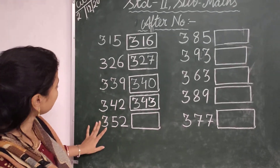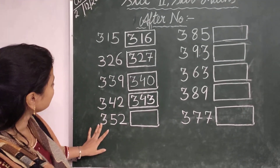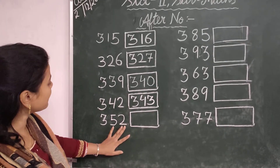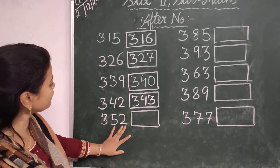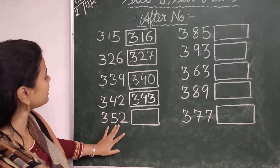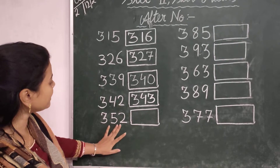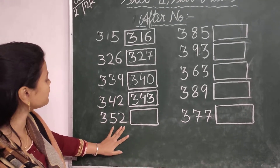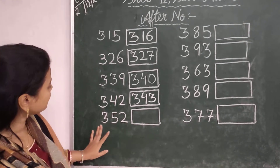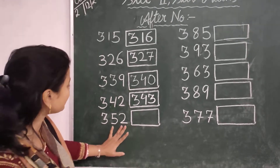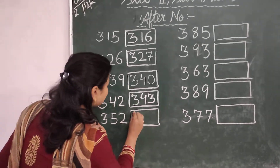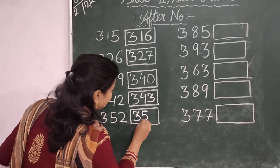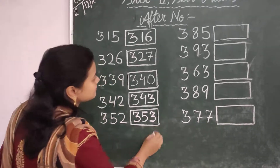Then the next number is 352. Here 52. The number that comes after 52 is 53. So the number that comes after 352 is 353.